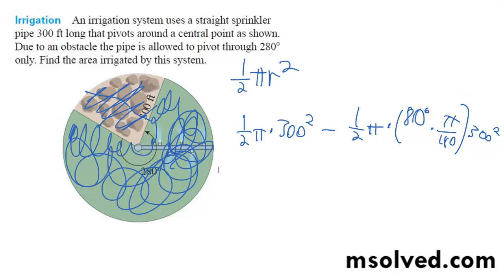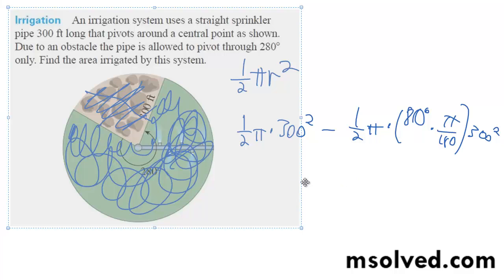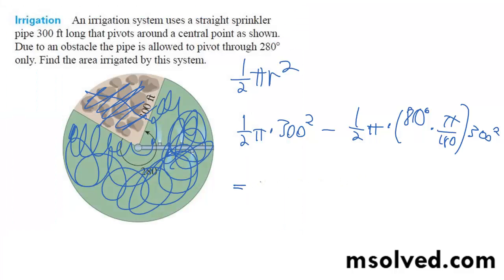What I end up with is pi times 300 squared times 280 over 360, or simply 7 over 9,